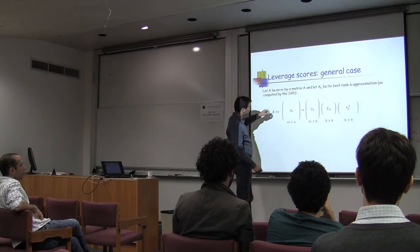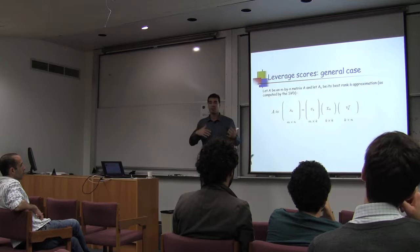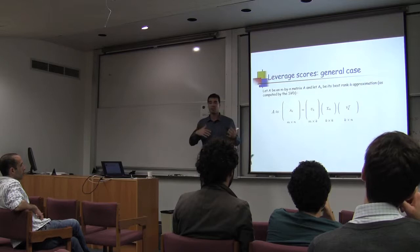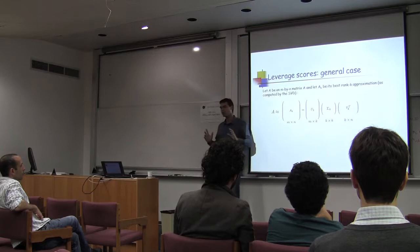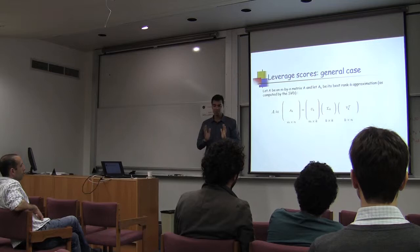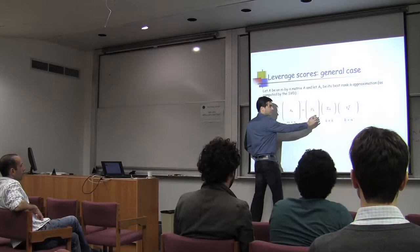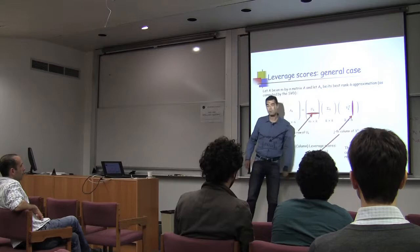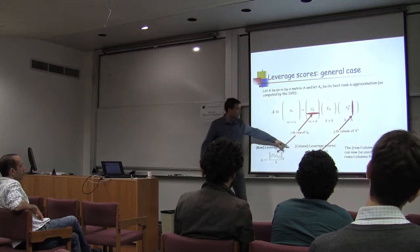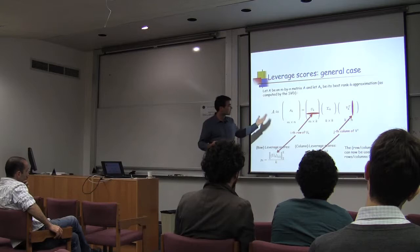For the general case — an M by N matrix where M is comparable to N — you define row and column leverage scores by focusing on a low rank approximation to the matrix. Looking at the best rank-K approximation A_k, with the top K left singular vectors, top K singular values, and top K right singular vectors, you define row leverage scores by the Euclidean norms of the rows of U_k, and column leverage scores by the Euclidean norms of the columns of V_k.